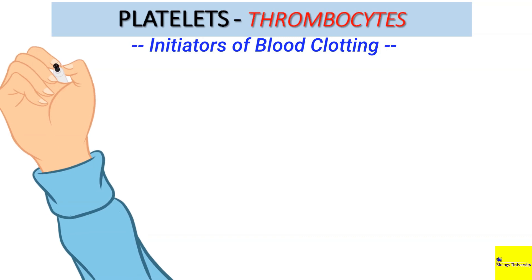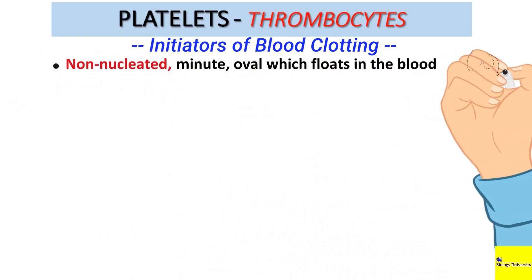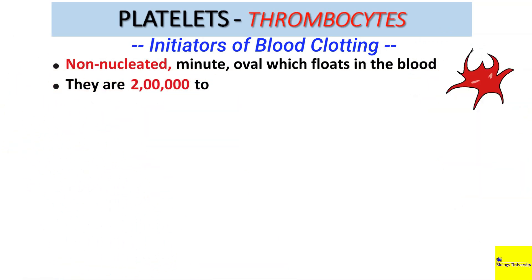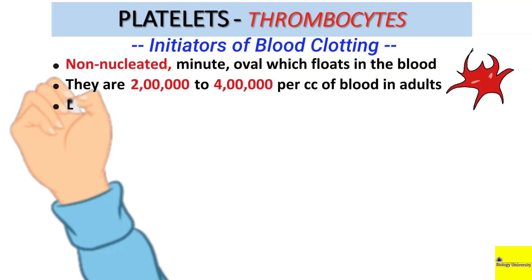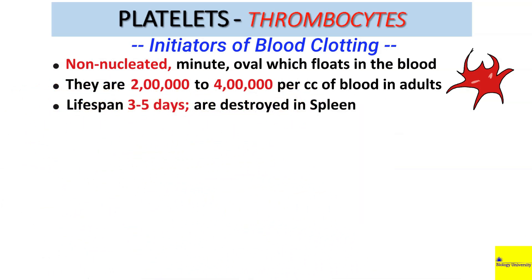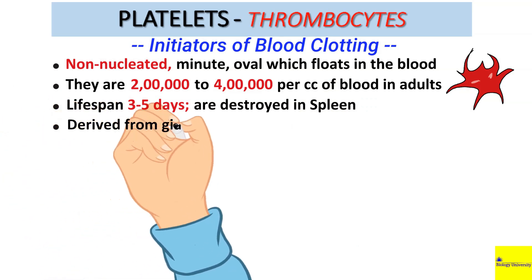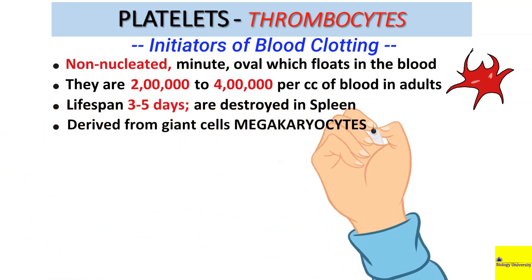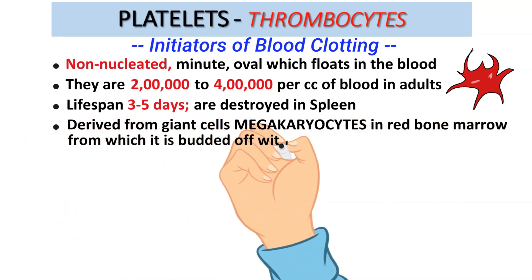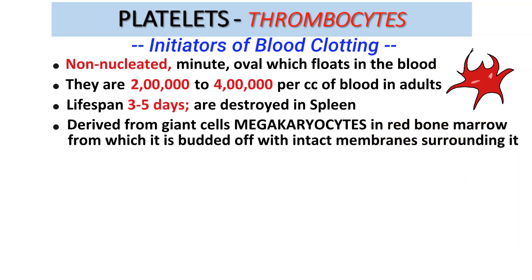Platelets are non-nucleated, minute, oval or round structures which float in the blood. These are about 2 lakhs to 4 lakhs per cc of blood present in an adult. Their lifespan is 3 to 5 days and they are destroyed mainly in the spleen. Platelets are derived from giant cells called megakaryocytes in the red bone marrow, and are budded off from the megakaryocytes such that each one is completely surrounded by a membrane.